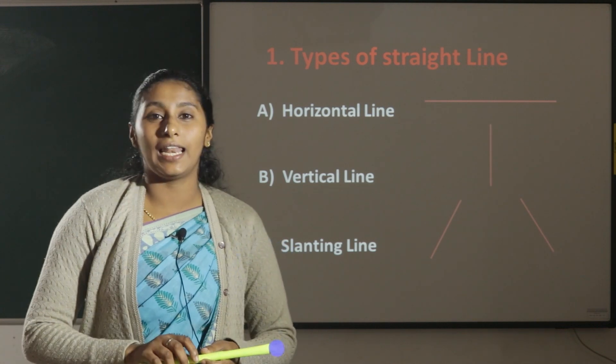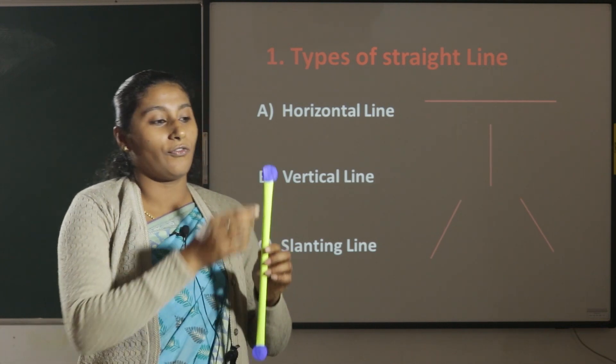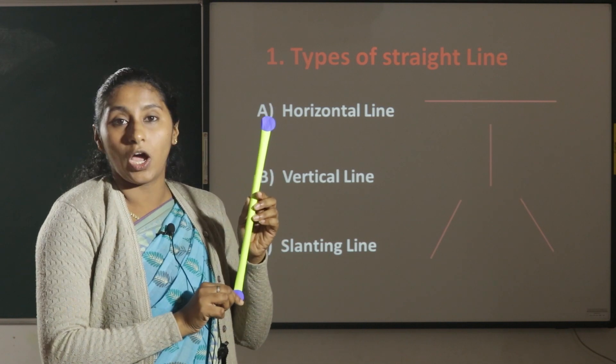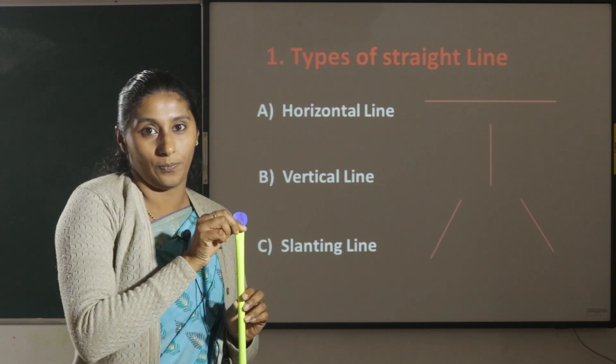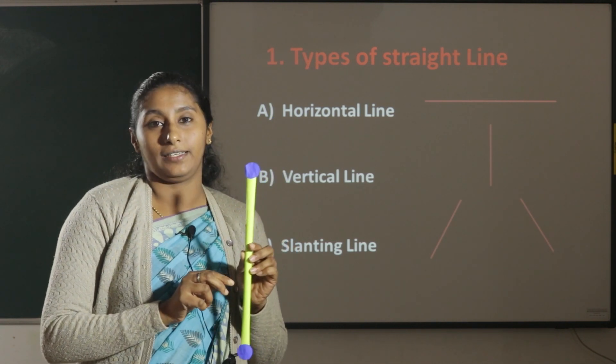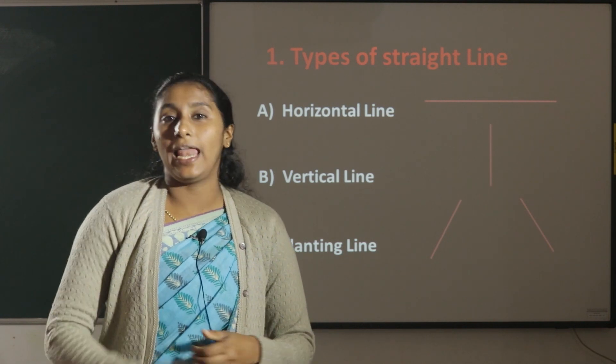Vertical line is a line which moves from top to bottom or bottom to top. It is a standing line. Examples, electric poles.